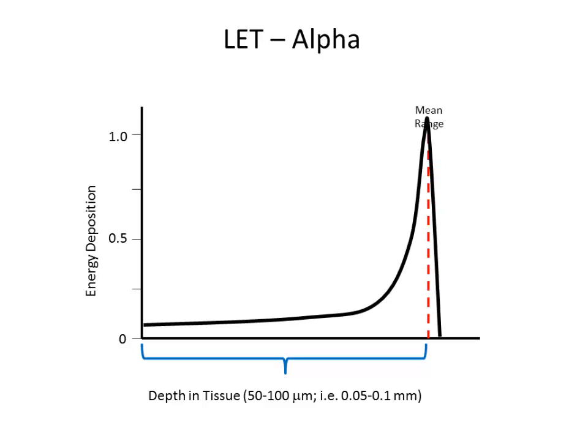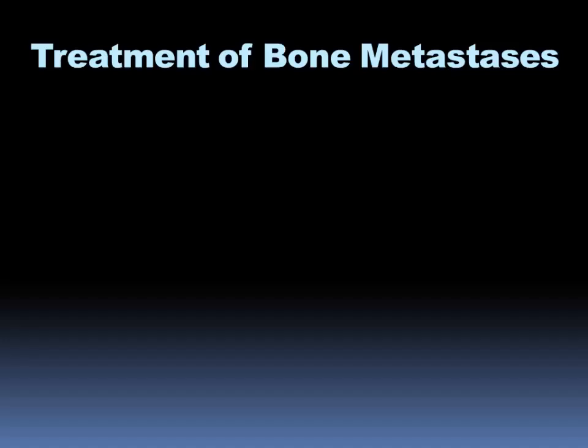The linear energy transfer profile shows that all of the energy deposition is occurring around the site of mean range. When that deposition occurs, you're getting all of the energy of the alpha particle deposited at that site, causing a great degree of local tissue injury.